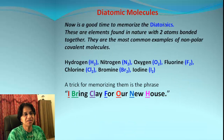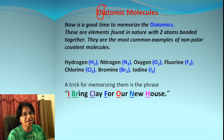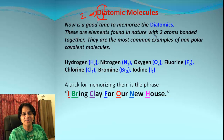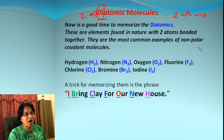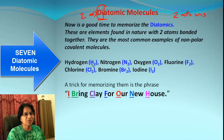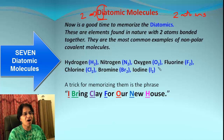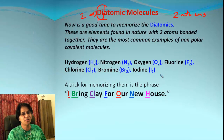Let's talk about diatomic molecules. In diatomic, the word 'di' means two, so all these molecules will have two atoms of that element. Those are hydrogen, nitrogen, oxygen, fluorine, chlorine, bromine, and iodine.